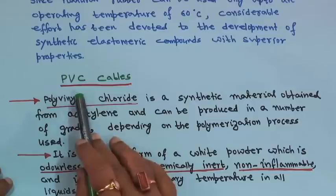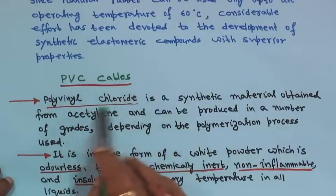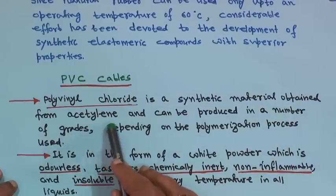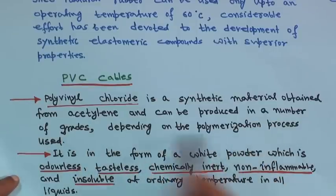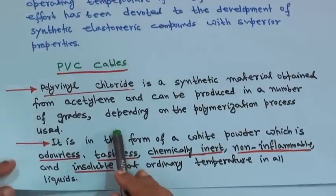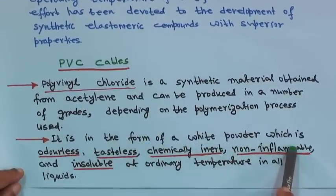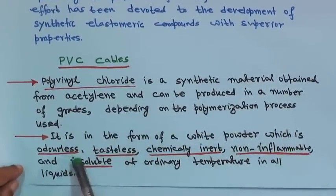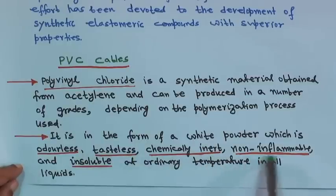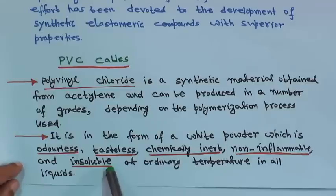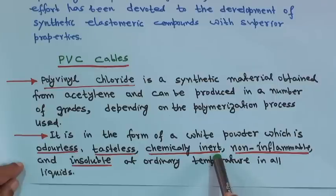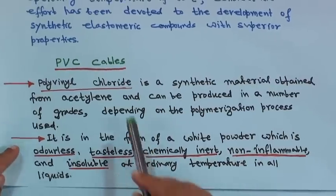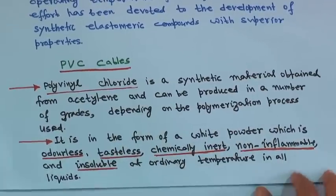PVC cables — polyvinylchloride — is a synthetic material obtained from acetylene and can be produced in a number of grades depending on the polymerization process. It is in the form of a white powder which is odorless, tasteless, chemically inert, non-inflammable, and insoluble at ordinary temperature in all liquids. This is the major advantage of PVC.